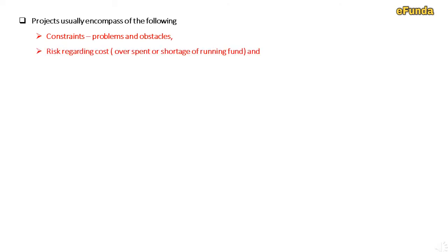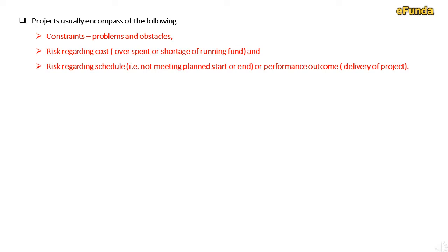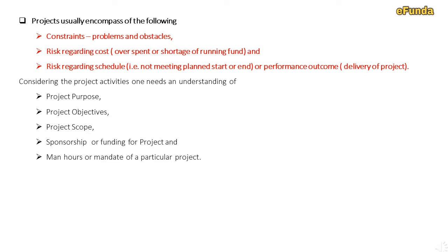A project usually encompasses the following constraints — problems and obstacles: risk regarding cost, either overspend or shortage of running funds; and risk regarding schedule, that is not meeting the planned start or end date; or performance outcome, that is the delivery of a project. To understand project activities, one needs an understanding of project purpose, project objective, project scope, sponsorship or funding for the project, and the mandate of a particular project.